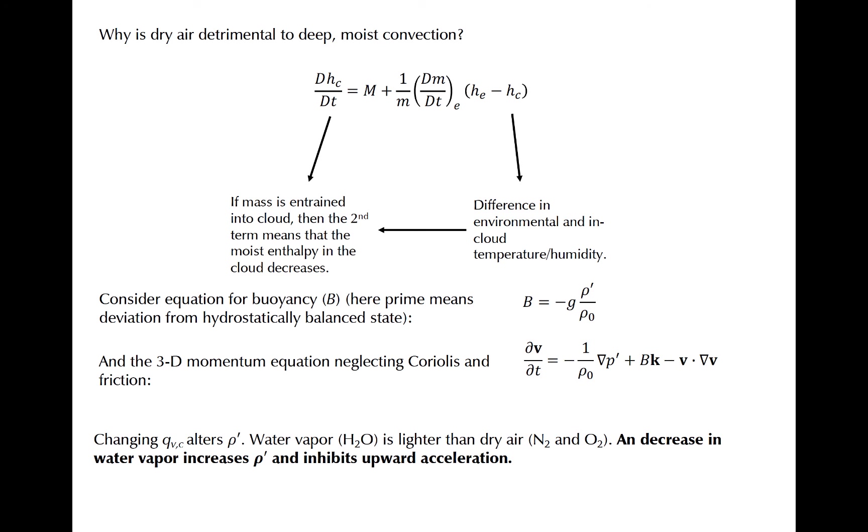Entrainment is a process that happens at small spatial scales in individual clouds. Therefore, numerical models of the atmosphere cannot resolve the process explicitly. It must be parameterized, or described in a mean or ensemble sense across the entirety of some area much larger than an individual cloud. Because of the great sensitivity of cloud buoyancy to moisture, accurate representation of tropical rainfall in models is extremely sensitive to parameterizations of entrainment.